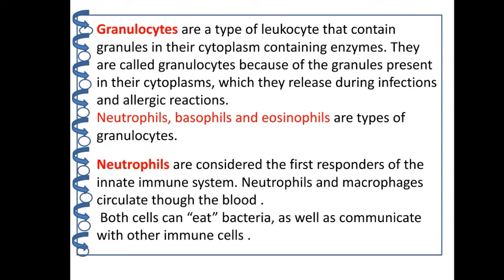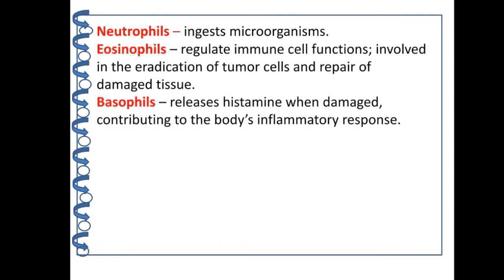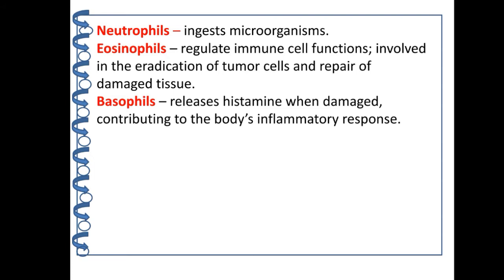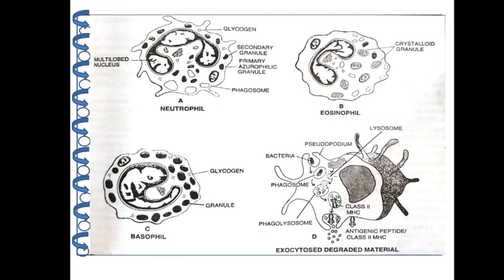Neutrophils are considered the first responders of the innate immune system. Neutrophils and macrophages circulate through the blood and both cells can engulf bacteria as well as communicate with other immune cells, so neutrophils ingest microorganisms. Eosinophils regulate immune cell functions involved in the eradication of tumor cells and repair of damaged tissues. Basophils release histamine when triggered, contributing to the body's inflammatory response. Monocytes are also a type of white blood cells that play a role in adaptive immunity. Here are pictures of neutrophils, basophils, and eosinophils showing different granules and the shape of the nucleus in different cells.